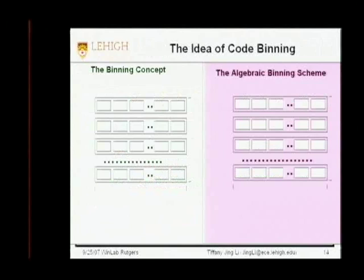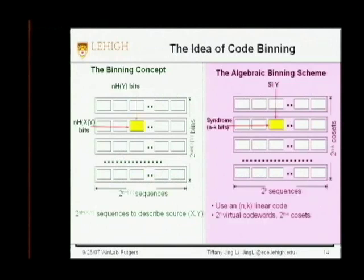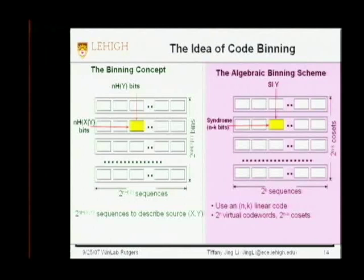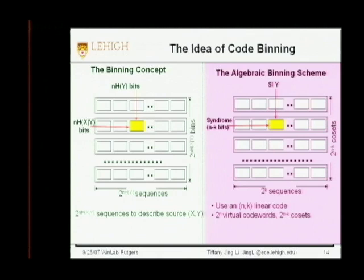The joint source sequences x and y can be described by 2^(n·H(X,Y)) typical sequences. We put them in a table with 2^(n·H(X|Y)) bins, each containing 2^(n·H(Y)) sequences. We need n·H(X|Y) bits to index a bin, and n·H(Y) bits to specify a sequence within the bin — combined, that's the joint entropy. In practice, we use an algebraic binning scheme based on a linear channel code. An (n,k) channel code gives 2^(n-k) cosets, each with 2^k sequences. The syndrome — n-k bits — indexes a coset, and side information y specifies the sequence within the bin.